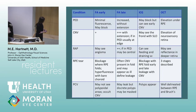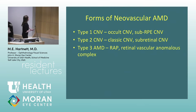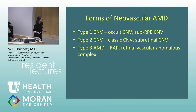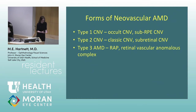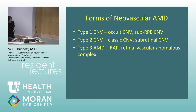The best way to see polyps in polypoidal choroidal vasculopathy is with ICG. Type 1 CNV is choroidal neovascularization underneath the retinal pigment epithelium. Type 2, or classic CNV, is what we treat with laser in the Macular Photocoagulation Study and with anti-VEGF — it breaks through the RPE into the neurosensory retina. Type 3 AMD is RAP — the retinal angiomatous proliferation or retinal vascular anomalous complex.